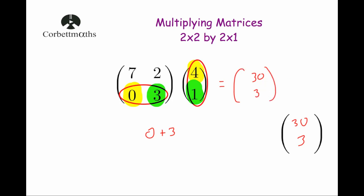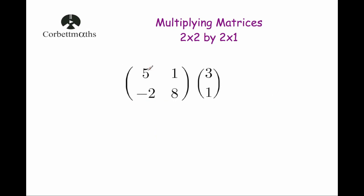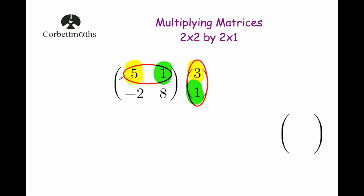Okay, let's have a look at another example. We're going to multiply the matrix 5, 1, negative 2, 8 by the matrix 3, 1. This one's a little bit different because we've got a negative in there, but just remember that a negative times a positive is a negative, and a negative times a negative is a positive. So we're going to multiply the first row by the column, and then the second row by the column.